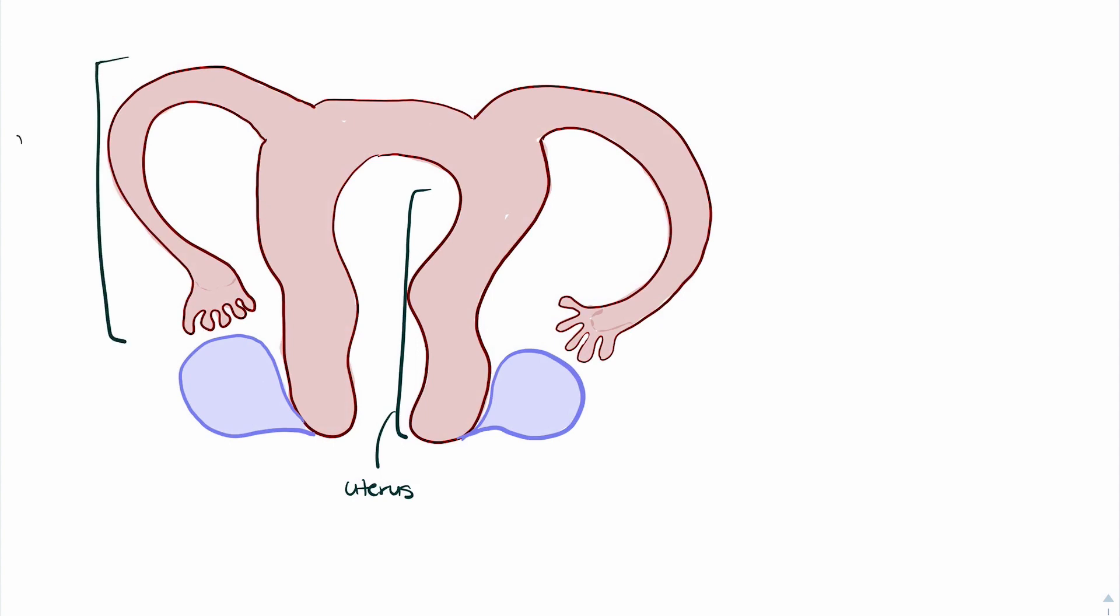So we can see the uterus here, we have the fallopian tubes that extend down to the ovaries here. You'll notice a space between the fallopian tube and the ovary, and then we have the ovaries which are found bilaterally beneath the fallopian tubes.